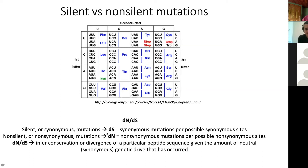Silent or synonymous mutations provide the metric DS. DS itself is the rate of synonymous mutations per possible synonymous site in a given sequence. Non-silent or non-synonymous mutations — these terms are used interchangeably — provide the metric DN, which is the rate of non-synonymous mutations per all non-synonymous sites in a given sequence. Thus, DN/DS is a ratio of these two rates, and you can use it to infer conservation or divergence of a particular peptide sequence.